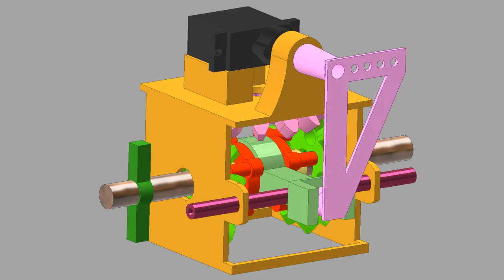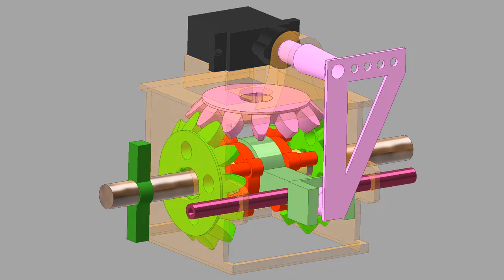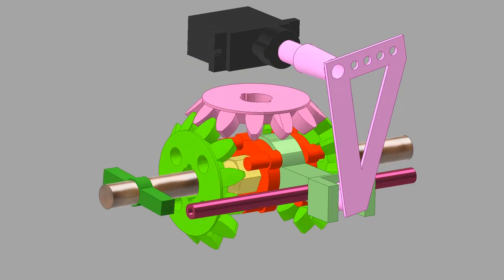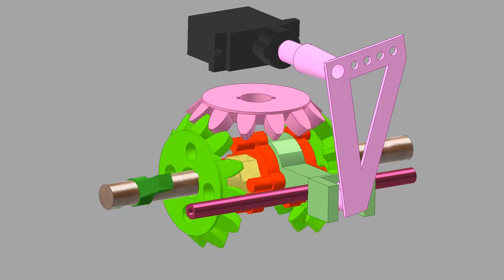This gearbox is able to shift between forward, neutral, and reverse gear. It relies on a set of miter gears in constant mesh, where the top pink gear is the input and the two green gears act as outputs.